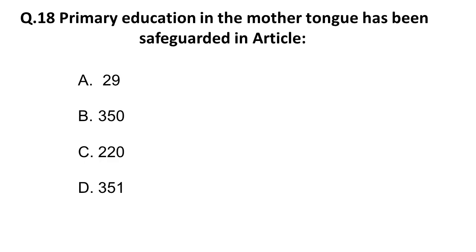Question 18: Primary education in the mother tongue has been safeguarded in which article? Remember all articles related to education — this is an important question. Options: A) Article 29, B) Article 350, C) Article 220, D) Article 351. The correct answer is B: Article 350 safeguards primary education in the mother tongue.